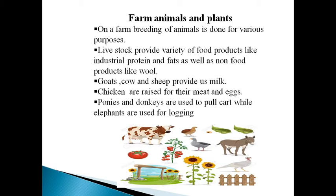Some of the agricultural tools used for farming are pick mattock, grapple, shovel, and rig. Pakistan's major crops are rice, wheat, maize, and groundnut, and cash crops are tea and coffee.